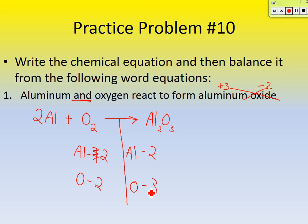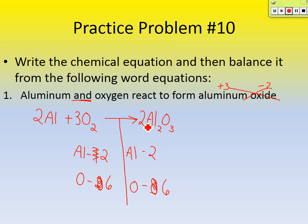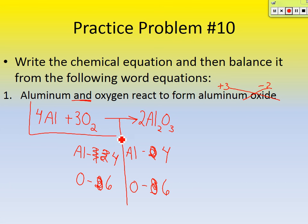I've got 2 oxygens on the reactant side and 3 on the product side. What's the lowest number that 2 and 3 both go into? Six. To get to 6 on the reactant side, I need a coefficient of 3 — that's 3 times 2 = 6 oxygens. On the product side, a coefficient of 2 gives 2 times 3 = 6 oxygens. But that changed aluminums to 4, so I update the reactant coefficient to 4. The balanced equation is 4Al + 3O2 → 2Al2O3.